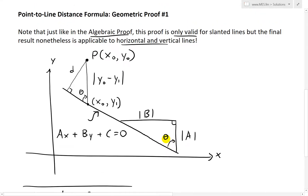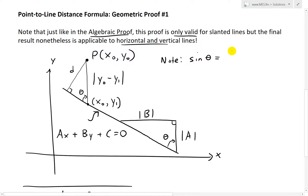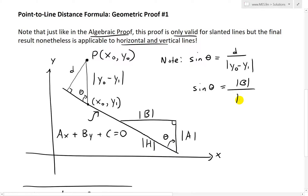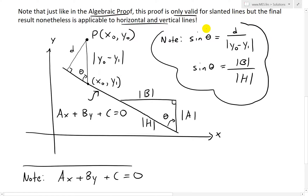So notice the similarities: we have an angle here that's exactly the same as this one, because all it is is a vertical line. So what we can do is correlate the two triangles. The sine of theta — since sine is opposite over hypotenuse — gives us sine theta equals d over the absolute value of y₀ minus y₁. And we can also relate that with sine theta equals the absolute value of b over the absolute value of h.